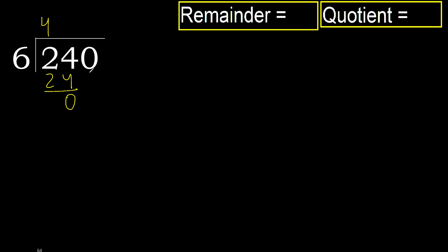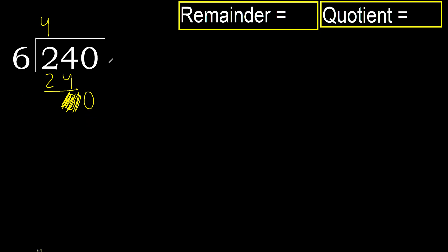Subtract, result is 0. Next, bring down 0 on this side. 0 is less, therefore next. That is not a number, therefore finish it.